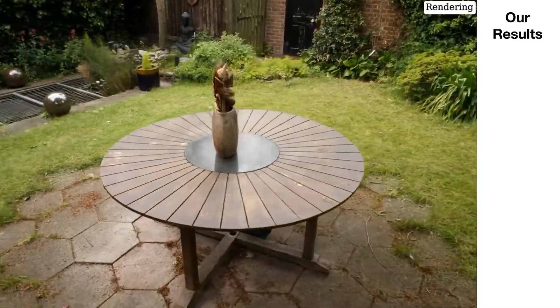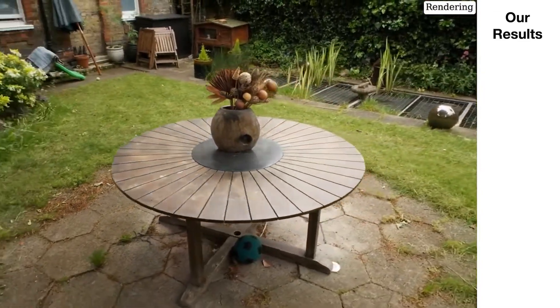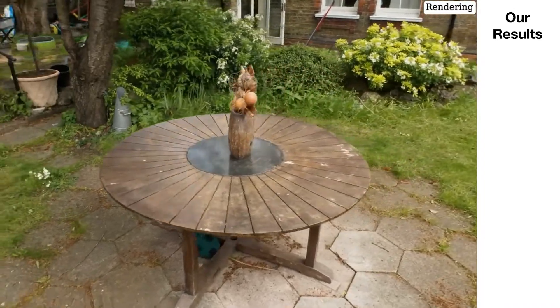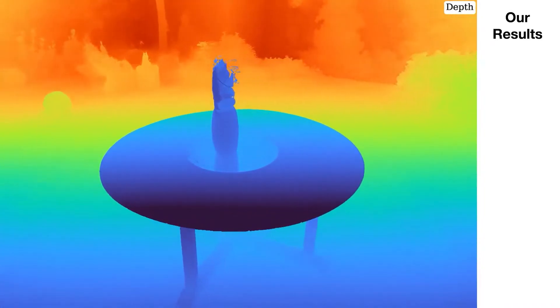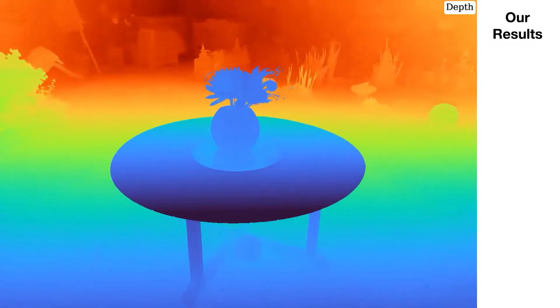Here's a rendering from our model so given a couple of hundred posed images of this scene we're able to produce photorealistic renderings from unseen camera positions. We can also query this model to produce depth maps which exhibit a lot of fine-grained detail.